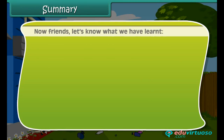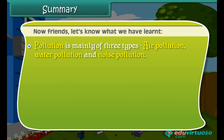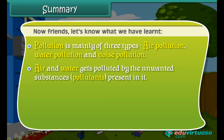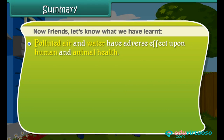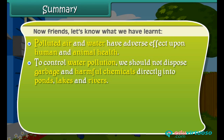Now let's recap what we have learned. Pollution is mainly of three types: air pollution, water pollution, and noise pollution. Air and water get polluted by unwanted substances — pollutants — present in them. Sewage from homes and wastes from factories are the main sources of water pollution. Polluted air and water have adverse effects on human and animal health.